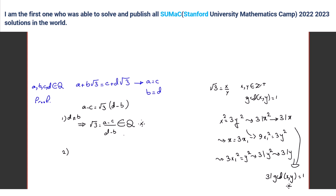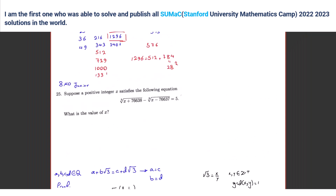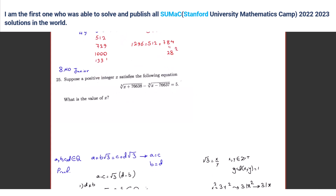So if d equals b, you can cancel them and then a equals c, which is what you want. And for the other case we reach a contradiction. Now that you know something like that, try to work on problem 25.